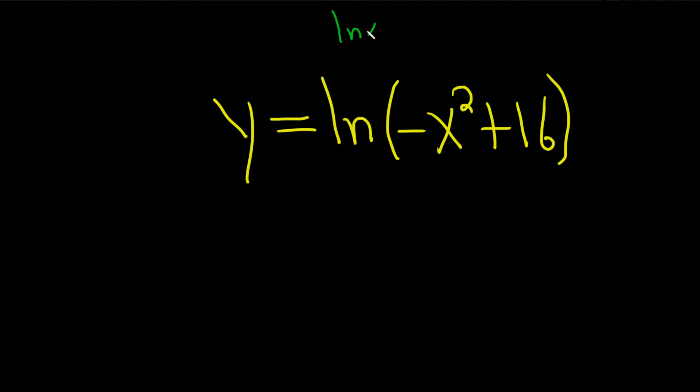So if it was just ln then we know x has to be positive. So here it's ln of this, so this whole thing here has to be positive.